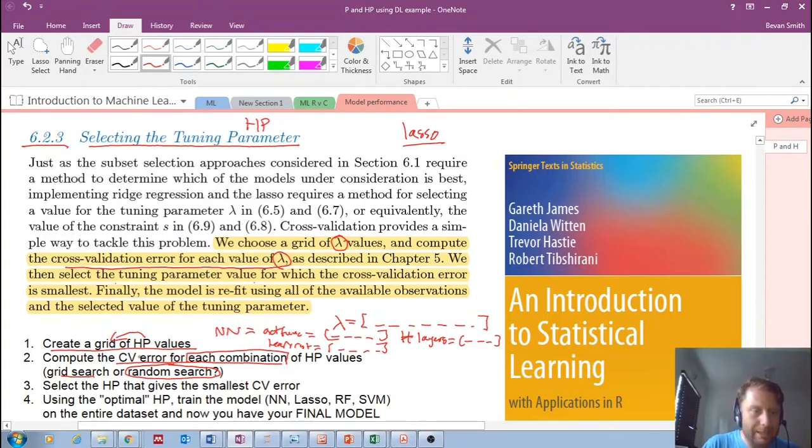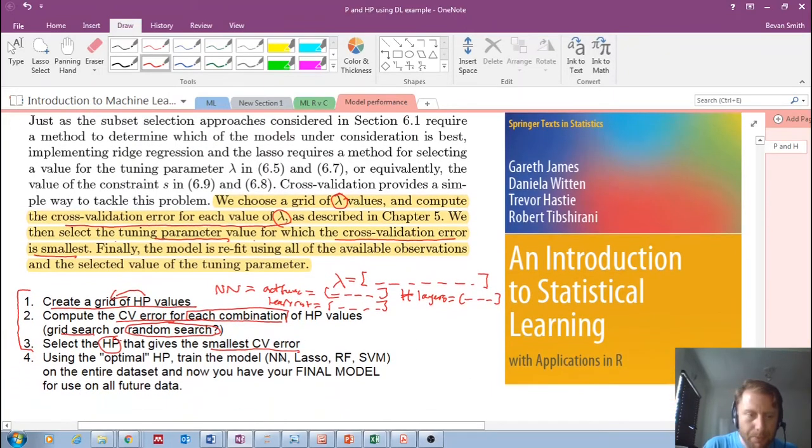Calculate a cross validation error and then select the hyper parameters that give you the smallest cross validation error. We select the tuning parameter value for which the cross validation error is smallest. If you've been following the videos, you know this by now. Now what do you do once you've found that optimal hyper parameter? This is what you do.